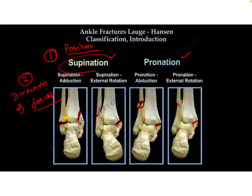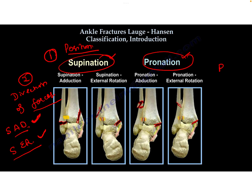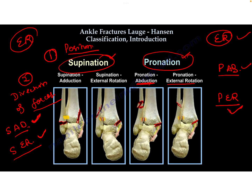If the foot is in supination, there are two forces acting upon it: an adduction force and an external rotation force. So there are two types of supination fractures: supination-adduction and supination-external rotation. If the foot is in pronation, the two forces are abduction and external rotation, giving pronation-abduction and pronation-external rotation injuries. External rotation injuries are common in both supination and pronation, while a supinated foot has adduction and a pronated foot has abduction type injuries.